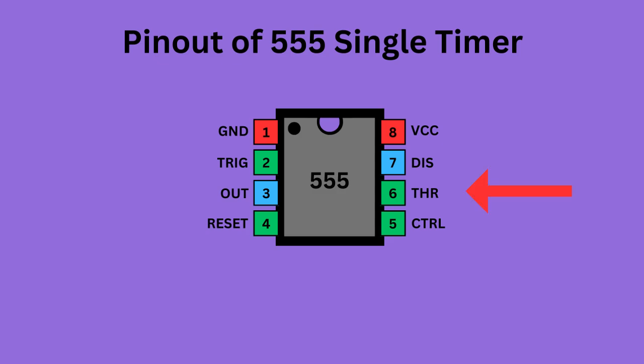Pin six, the threshold pin, monitors the voltage of the capacitor in the circuit. Pin seven, the discharge pin, manages the timing capacitor's charge and discharge cycle. Pin eight, known as VCC, supplies power to the IC.